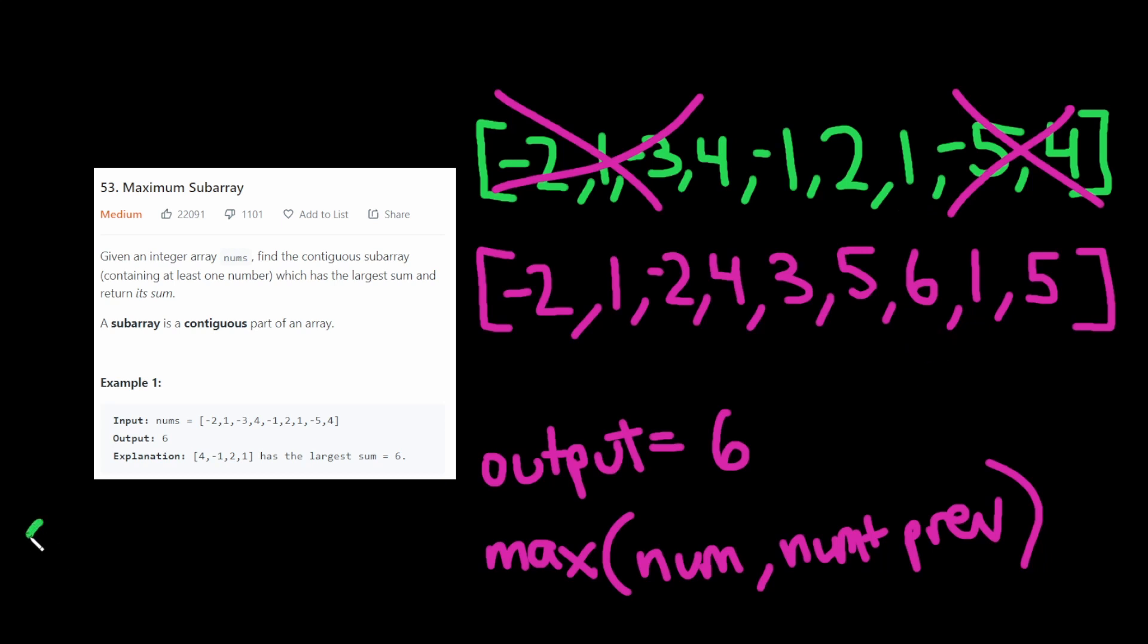And so in terms of time complexity we have O(N) because we just go through the array once. In terms of space complexity we have O(N) because we use another data structure to store the array.